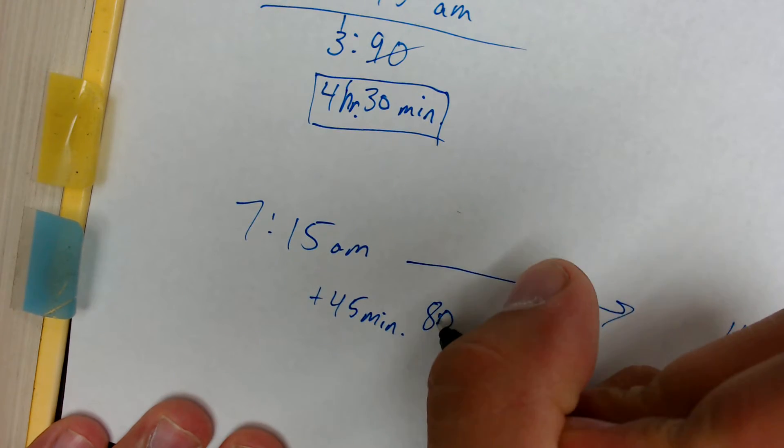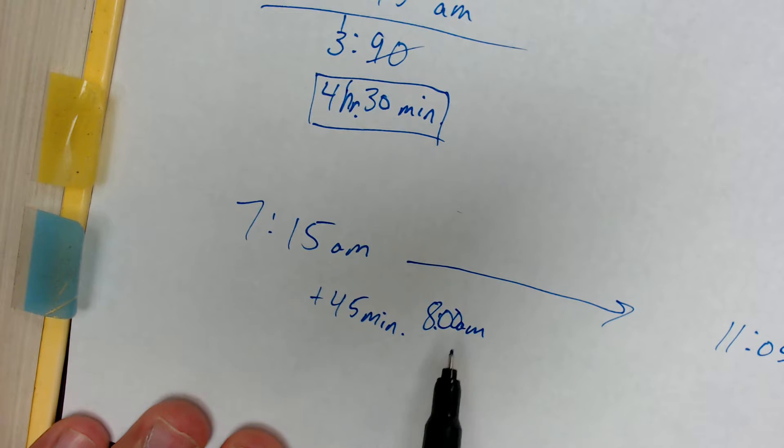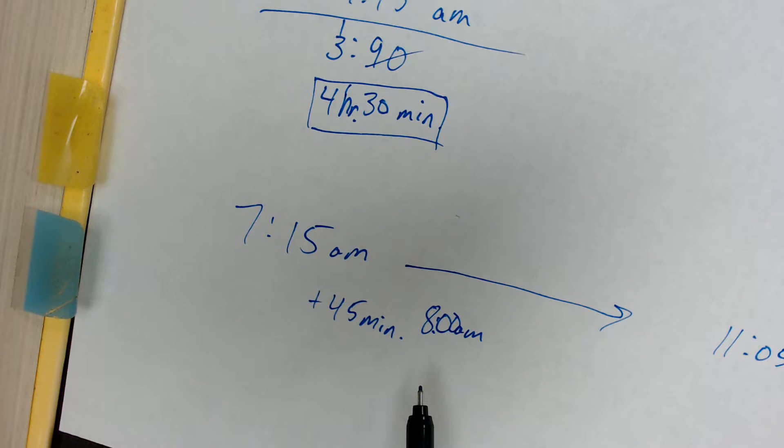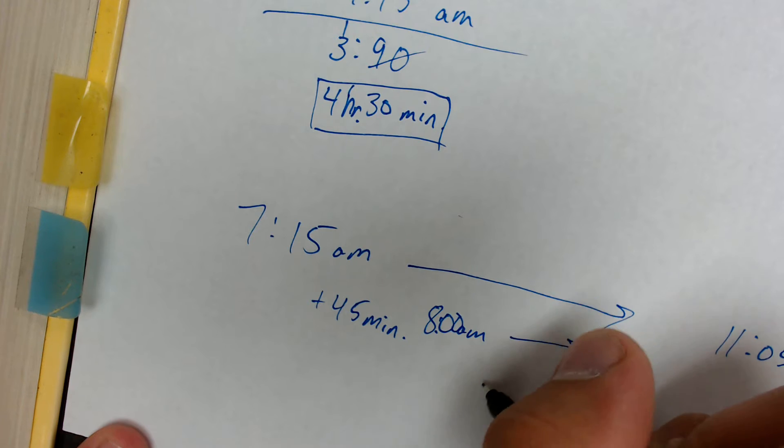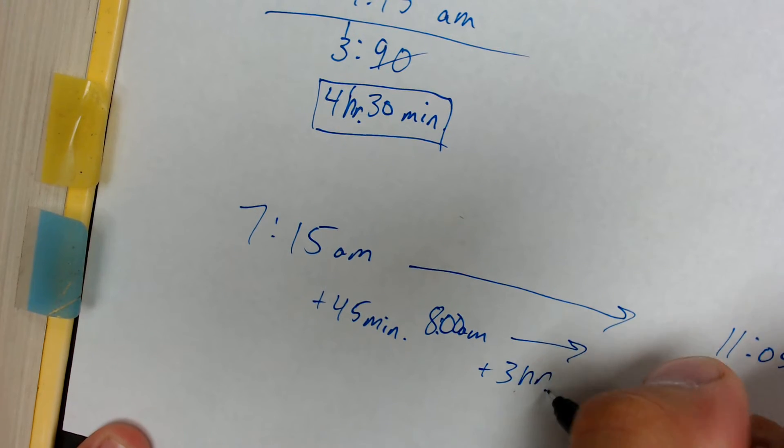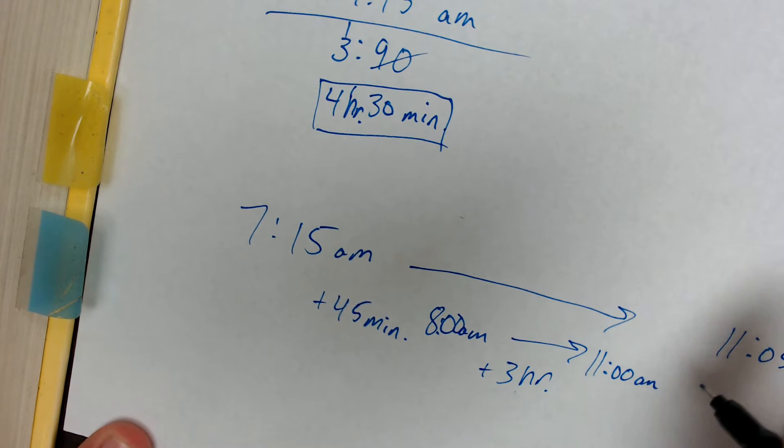So how many minutes do I need to get to 8 a.m.? Because I'm going from 7:15 a.m. all the way to 11:05 a.m. So I'm just going to go up to the next hour. In order to go from 7:15 to 8 a.m., I have to add 45 minutes. And now I'm at 8 a.m. Now, I would ask myself how much time do I need to go from 8 a.m. to 11:05 a.m. So from 8 to 11, that's three hours.